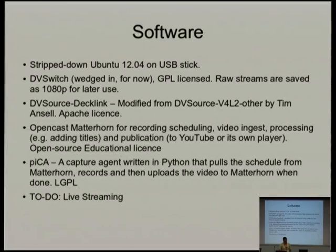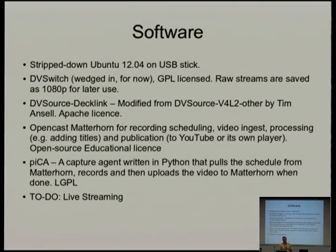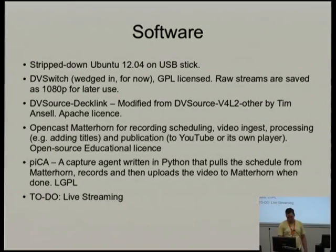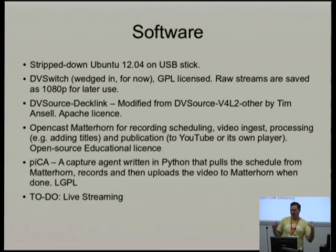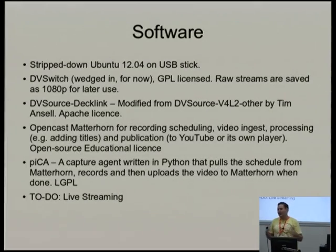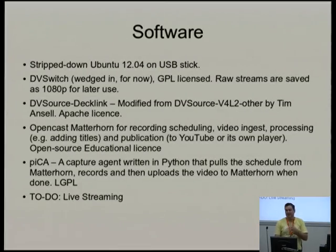This PC is using stripped-down Ubuntu 12.04 LTS on USB. The reason is if something goes wrong with the software or the image corrupts, we can just pop in a new stick. The actual video is recorded onto a hard drive inside the PC, so the video will always be there. We're still using DVSwitch at the moment, but that's going to change soon. We're saving the streams as raw streams via GStreamer — I've modified DVSource to put Decklink support in and tee it off so it saves the raw video as well, handy for re-editing later.